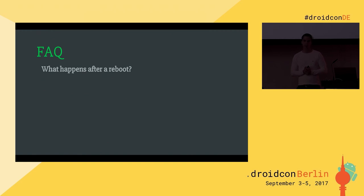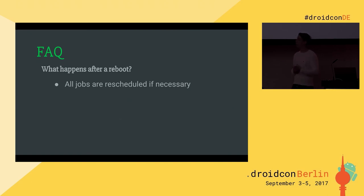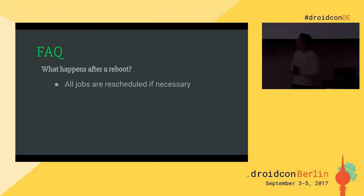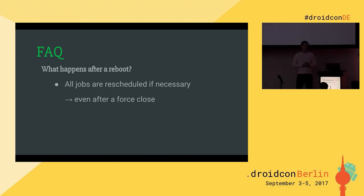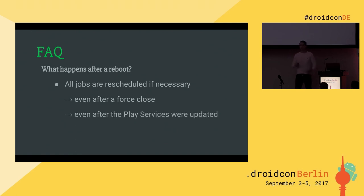What happens after a reboot? The library tries to reschedule your jobs automatically. This is necessary for example when the AlarmManager is used. You don't have to worry about this — if you want to run a job, we do all the work. If you really don't want to run it anymore, you have to cancel it manually. The same thing happens after a force close — if you force close an application all alarms inside the AlarmManager are cleared, and it's really difficult to detect this and reschedule tasks. The library handles this for you, also after Play Services are installed and after your application is updated.